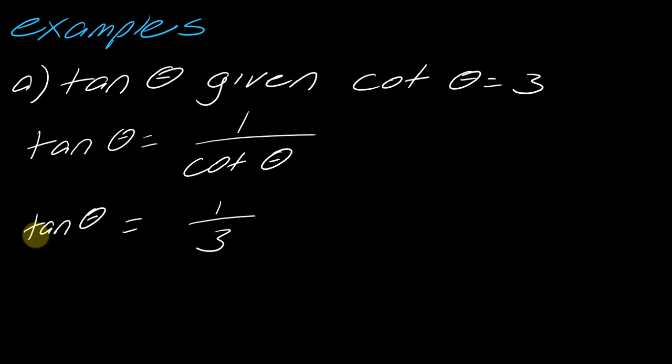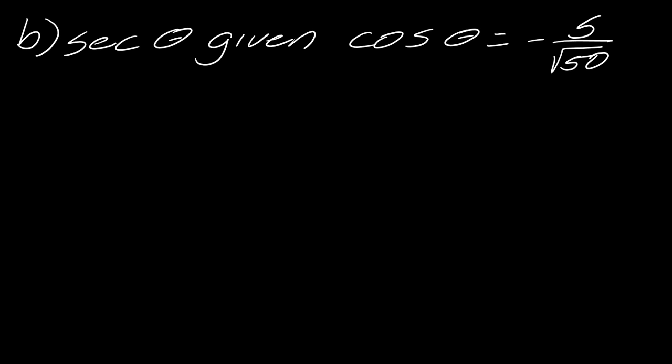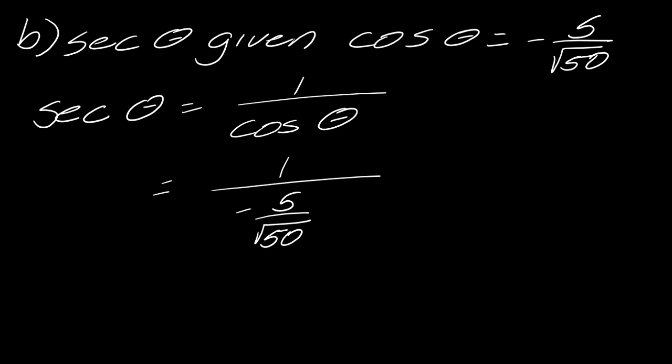What about secant of theta given cosine of theta equals negative 5 over the square root of 50? Secant of theta I know is equal to 1 over cosine of theta. So 1 over cosine of theta comes out to negative 5 over the square root of 50. Since this is now in the denominator, I can flip this, so I can rewrite this as negative square root of 50 over 5.